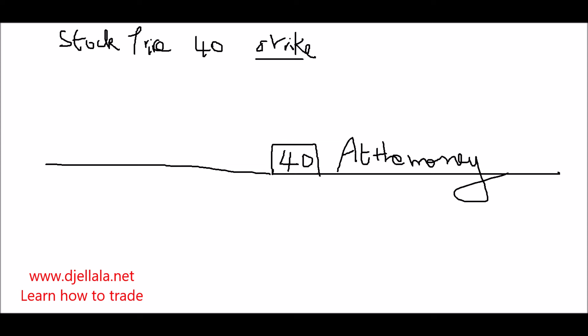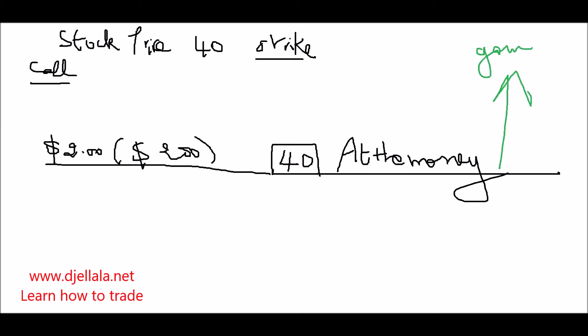Let's say the strike price is $40 and the price of the call option is $2. That means you are going to pay $200 for this contract. Now, a call is when you think that the market is going up in the future — that's why you buy a call.